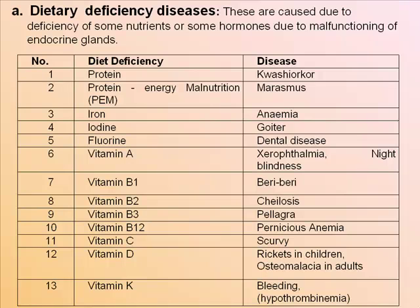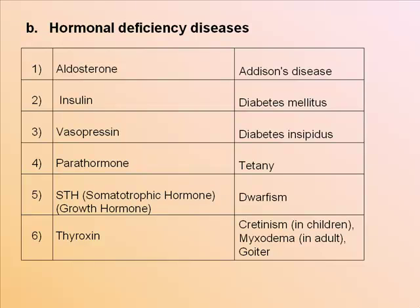Dietary deficiency diseases are caused due to deficiency of some nutrients or hormones due to malfunctioning of endocrine glands. Hormonal deficiency diseases: aldosterone deficiency causes Addison's disease; insulin deficiency causes diabetes mellitus; vasopressin deficiency causes diabetes insipidus; parathormone deficiency causes tetany; growth hormone deficiency causes dwarfism; thyroxine deficiency causes cretinism in children, myxedema in adults, and goiter.